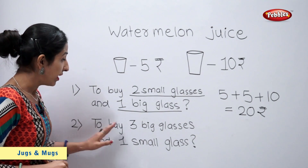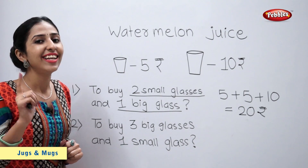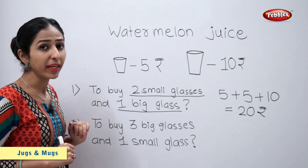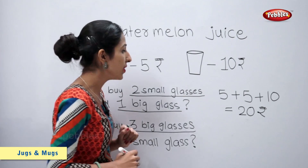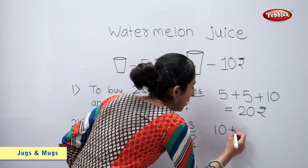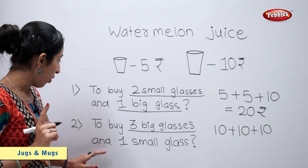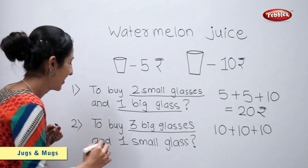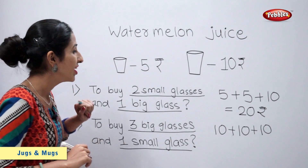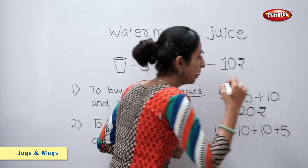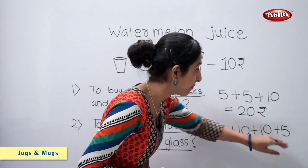Now, tell me students: to buy 3 big glasses and 1 small glass, how much money will you need to pay? Let's count. We have to buy 3 big glasses. 1 big glass is rupees 10. So, 10 plus 10 plus 10. And we also have to buy 1 small glass, which is rupees 5, so plus 5. 10 plus 10 plus 10 plus 5 is equal to how much?